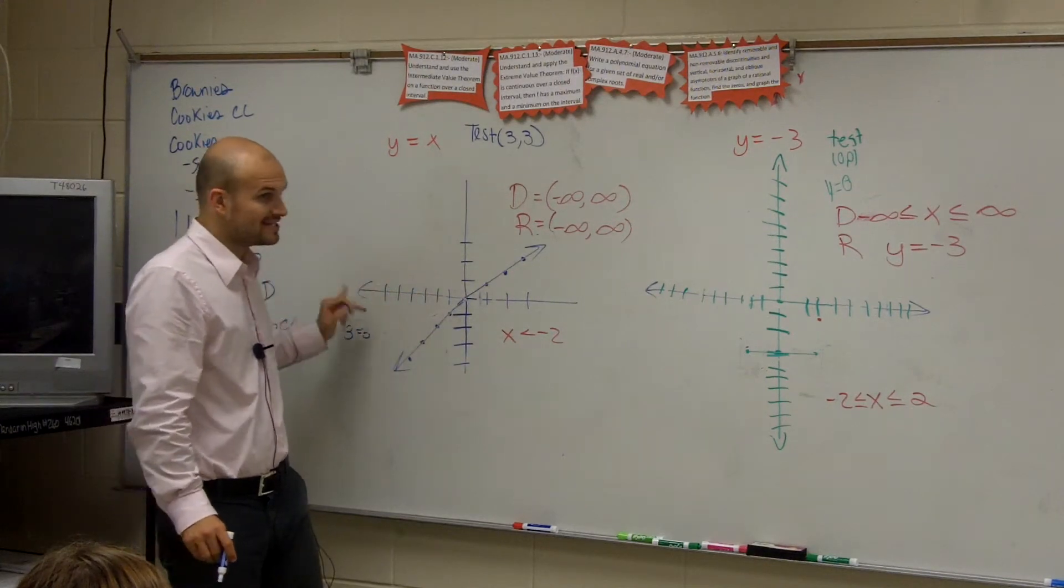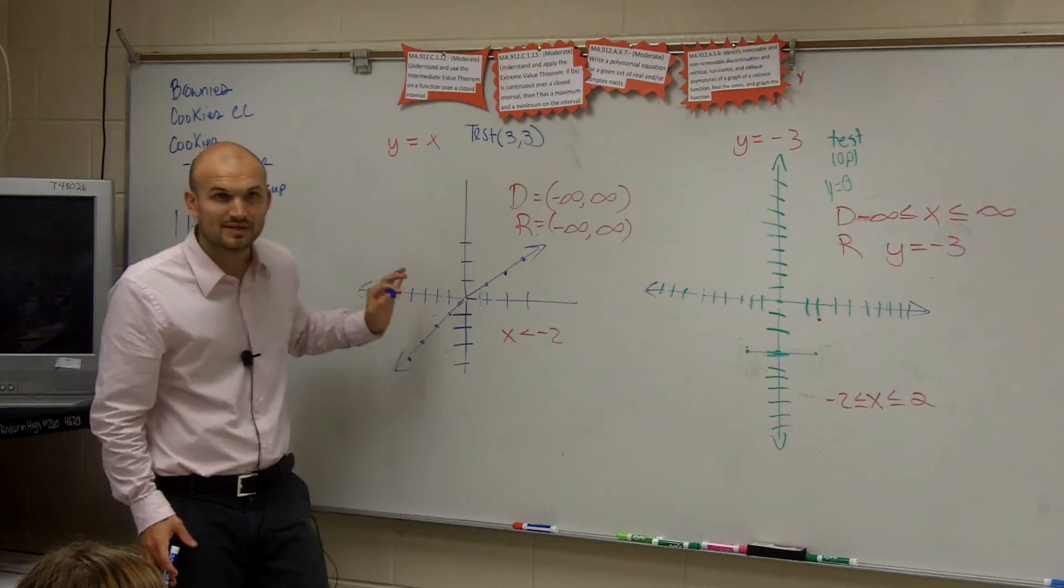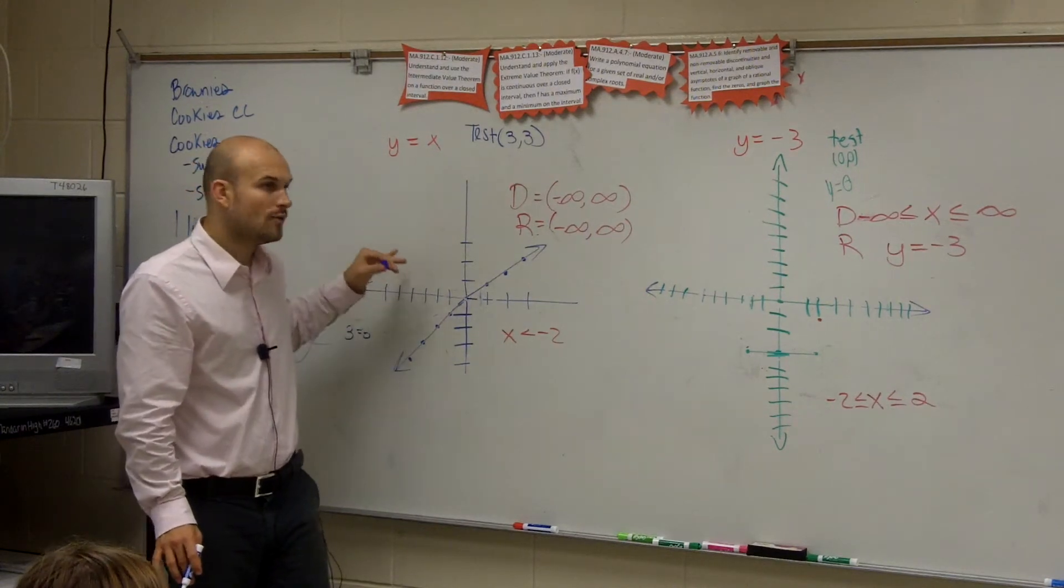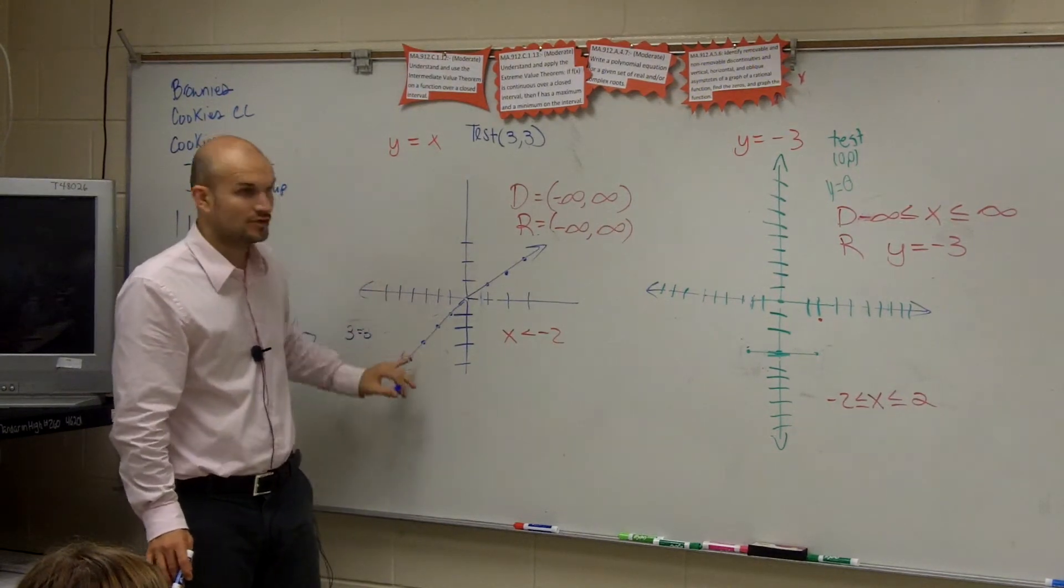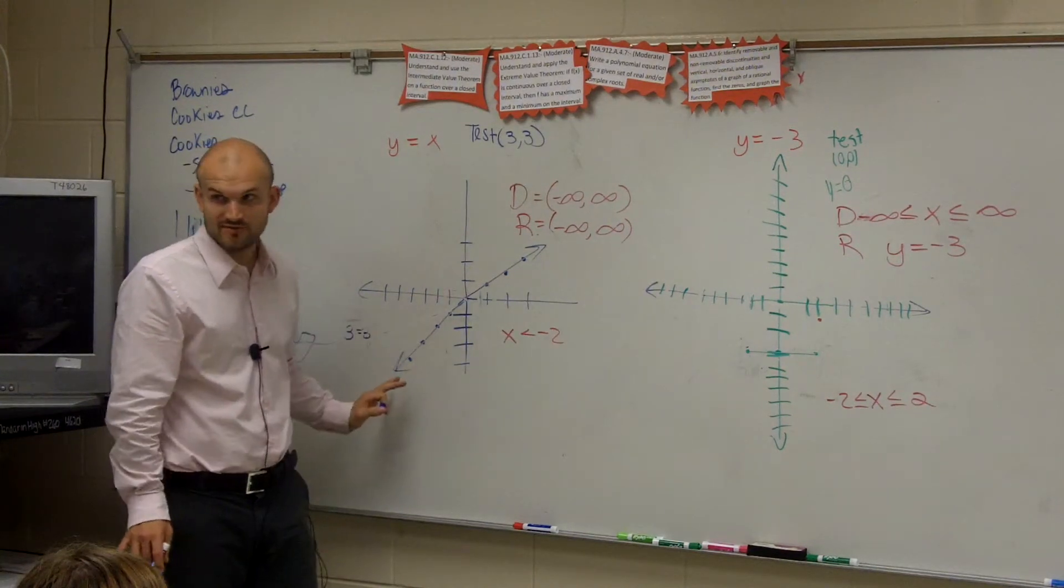We said the domain was from negative infinity to infinity. That means every x value going all the way to the left, all the way to negative infinity, the largest negative number you can possibly think of, is always going to have a value on this graph. Because this graph goes to infinity.